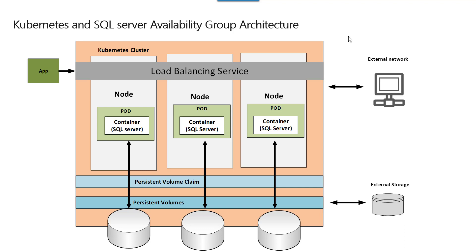Kubernetes and SQL Server Availability Group architecture: these nodes are serviced by a load balancing service, so whenever a user tries to access it, it is always accessed via the load balancing service. Every node has the pods which are running SQL Server containers, and these nodes are connected to the persistent volume claim and persistent volumes, which is nothing but an Azure disk. All communication from the outside network happens via the load balancing service, and this external storage is the Azure disk.